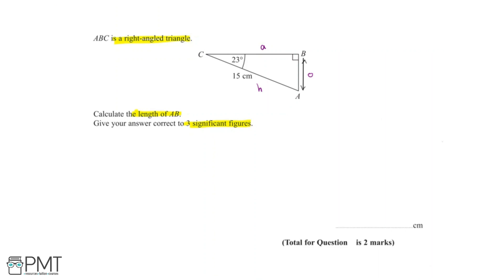We'll be using trigonometric identities in this question, which means we need to use either sine, cos, or tan. We know that sine is opposite over hypotenuse, cos is adjacent over hypotenuse, and tan is opposite over adjacent.